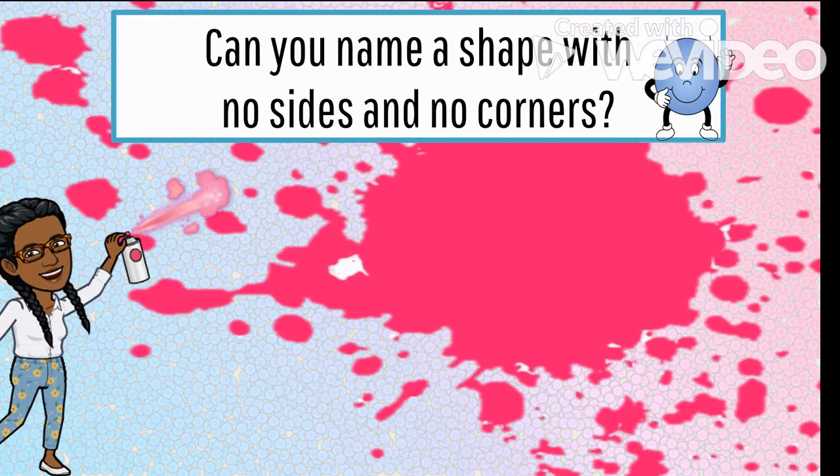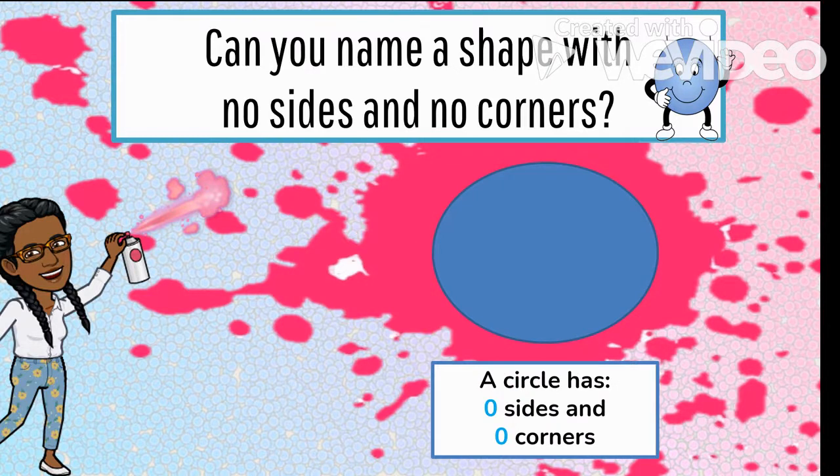Can you name a shape with no sides and no corners? I know this is not a trick question because you are so smart. Did you say a circle? I knew you could do it. A circle has zero sides and zero corners.